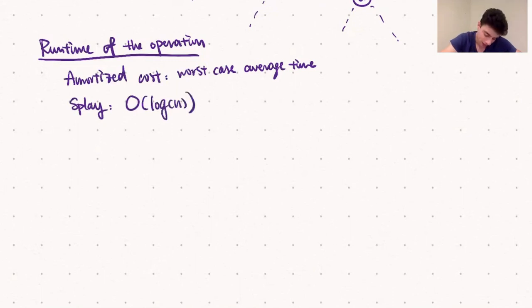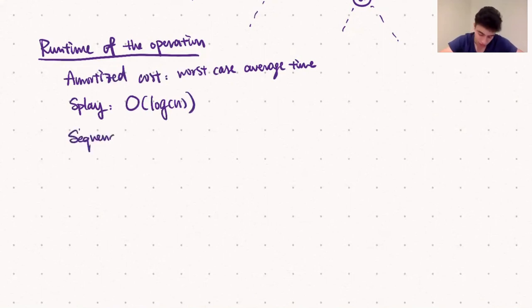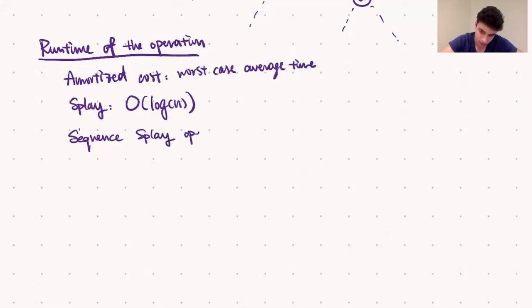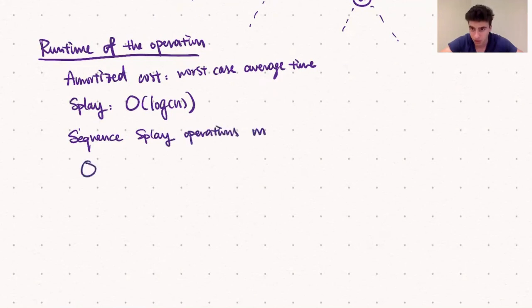If we consider a sequence of m operations on a splay tree, the cost of that sequence is bounded by O(m log n), where m is the number of operations and n is the number of nodes in the tree.